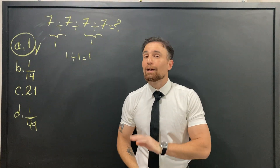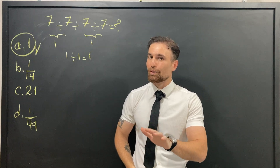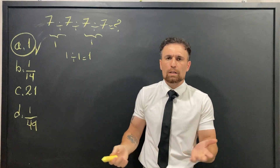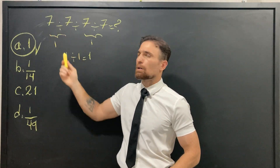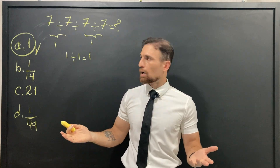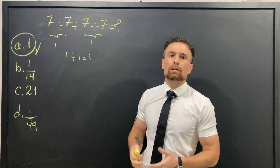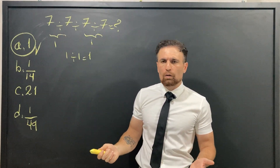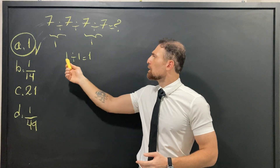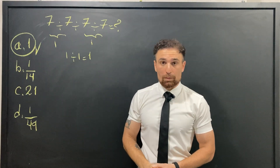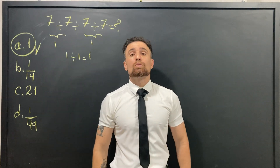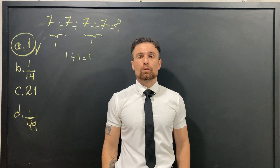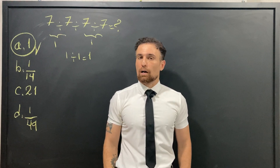But is this true? No! 7 ÷ 7 = 1 is correct, and 1 ÷ 1 = 1 is correct — so why is this wrong? To solve this type of question, we need to follow a set of rules called the order of operations.